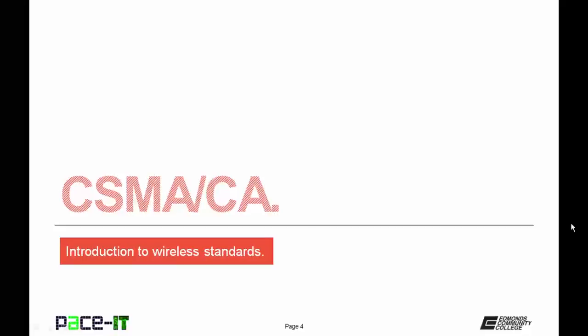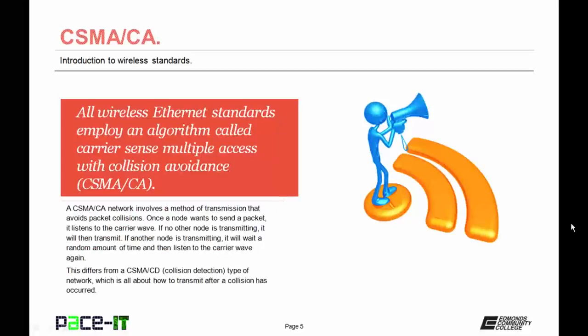I'm going to begin by talking about CSMA/CA. All wireless Ethernet standards employ an algorithm called Carrier Sense Multiple Access with Collision Avoidance — that's CSMA/CA. A CSMA/CA network involves a method of transmission that avoids packet collisions. Once a node wants to send a packet, it listens to the carrier wave. If no other node is transmitting, it will then transmit. If another node is transmitting, it will wait a random amount of time and then listen to the carrier wave again to see if it's free to send. This differs from CSMA/CD, which stands for collision detection, which is all about how to transmit after a collision has occurred.